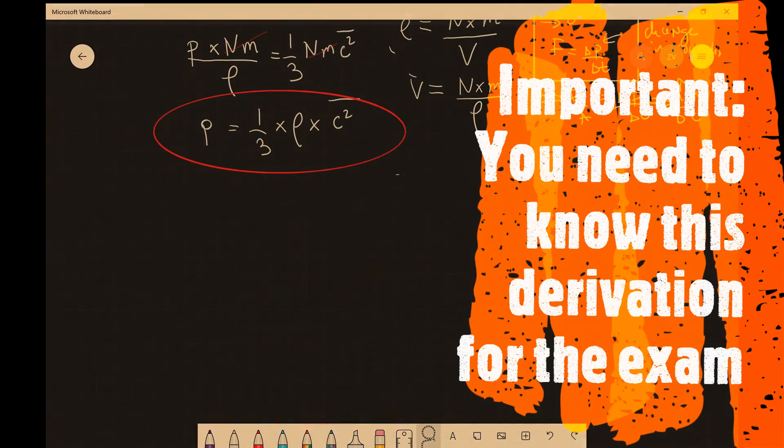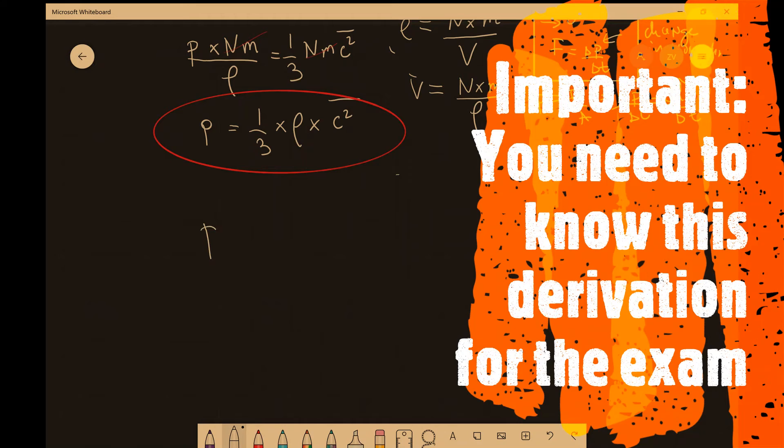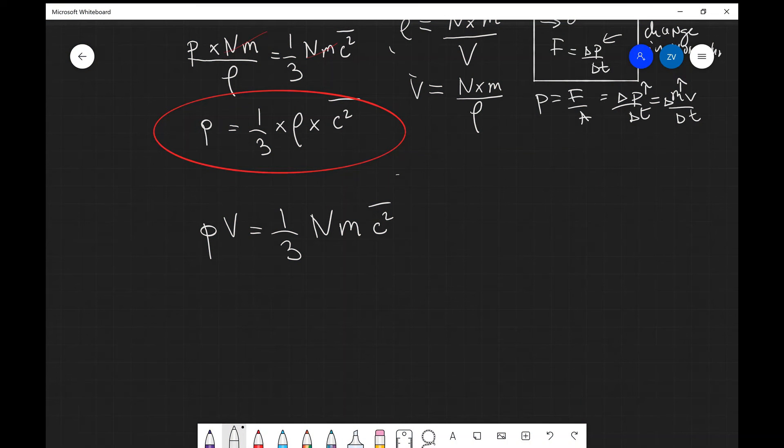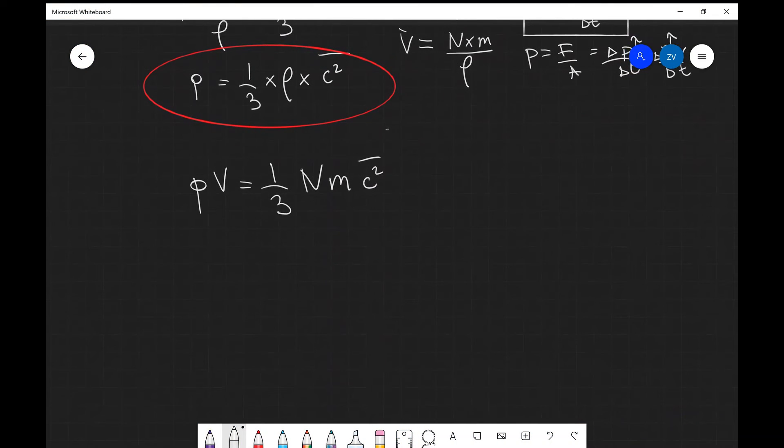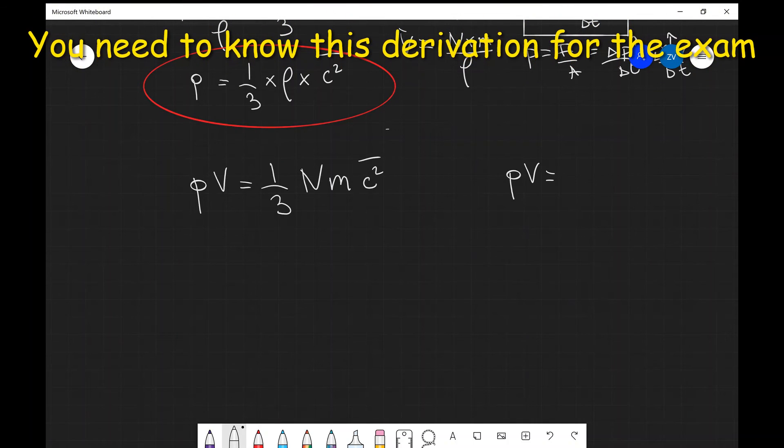I'm just going to rewrite it once again over here: PV equals one-third times the number of particles N times the mass of an individual particle m times the mean square speed c̄² at which those particles are moving. This equation is remarkably similar to PV equals nRT and PV equals NKT.